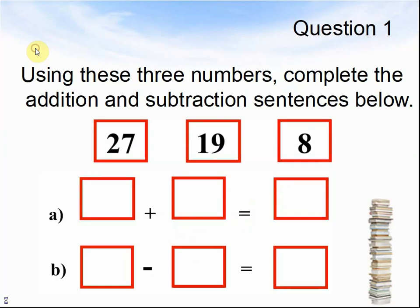Question 1. Using these three numbers, complete the addition and subtraction sentences below: 27, 19, and 8. A has two answers, B has two answers, so they only require you to give one of them. Pause the video until you are ready for the next question.